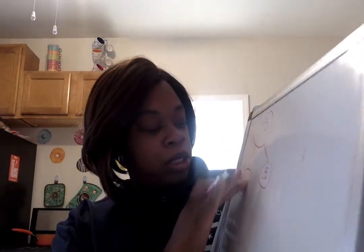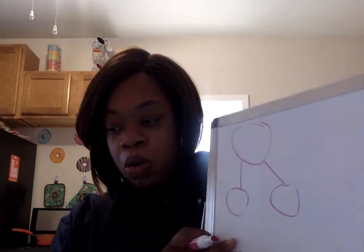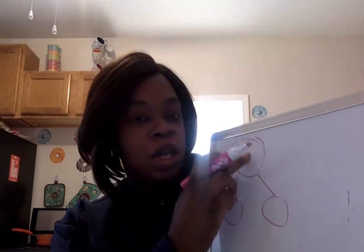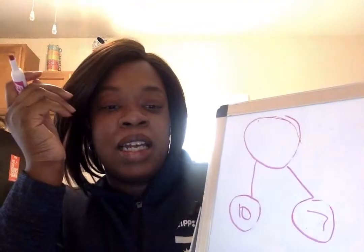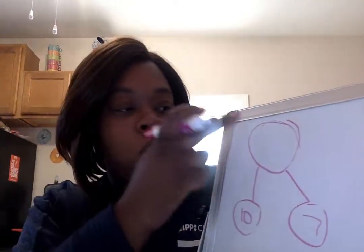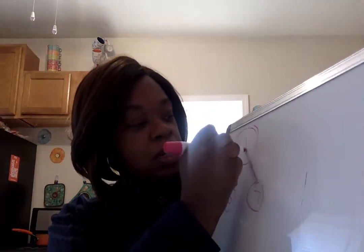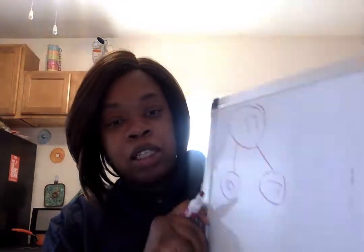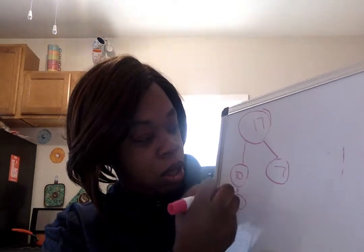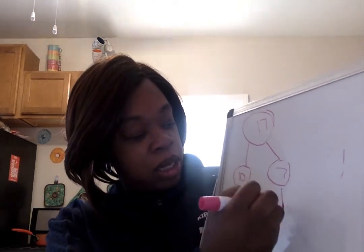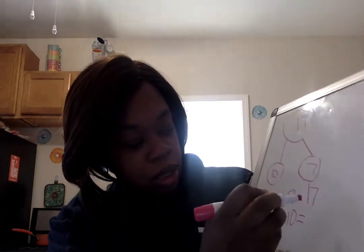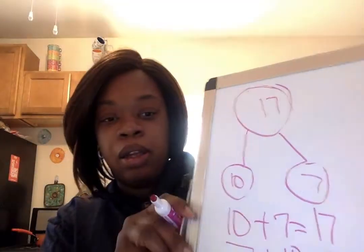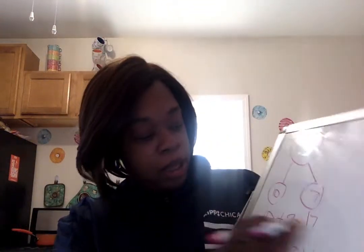Now we're going to do one together. I'm going to need some help. So this time my whole is blank. In my parts I have 10 and then I have 7. I want you guys to take a guess. If I have 10 ones and 7 ones, what number goes in my whole? What do you think? 17. So now we can write our number sentence: 10 plus 7 equals 17, or we can say 7 plus 10 equals 17. Thanks for your help.